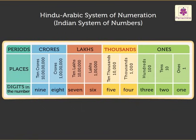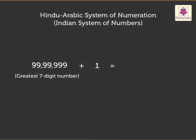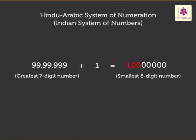The lakhs period comprises of two places: lakhs and ten lakhs. The crores period also has two places: crores and ten crores. The greatest seven digit number is ninety-nine lakh ninety-nine thousand nine hundred ninety-nine, and when one is added to it we obtain the smallest eight digit number. We write it as 1,00,00,000.